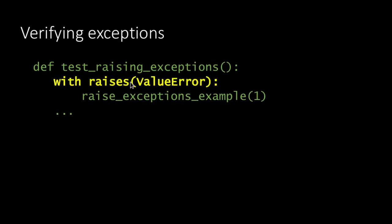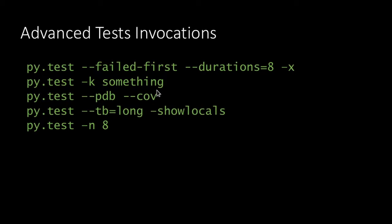Verifying exceptions is very, very simple — all we have to do is check that a function raises an exception. As for advanced features: once we understand it's easy to write tests, we can use the '--failed-first' flag. So if we have 100 or 200 tests and one of them failed and we run again, we want to start with the stuff that failed, make sure it's now passing, and then go to the other tests. This flag saves us time.